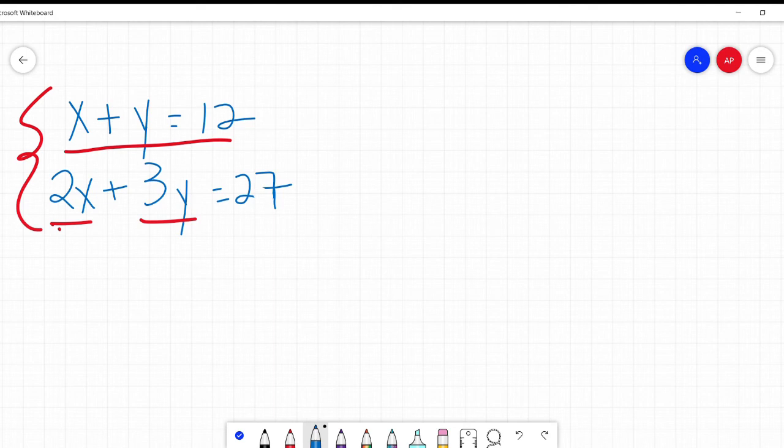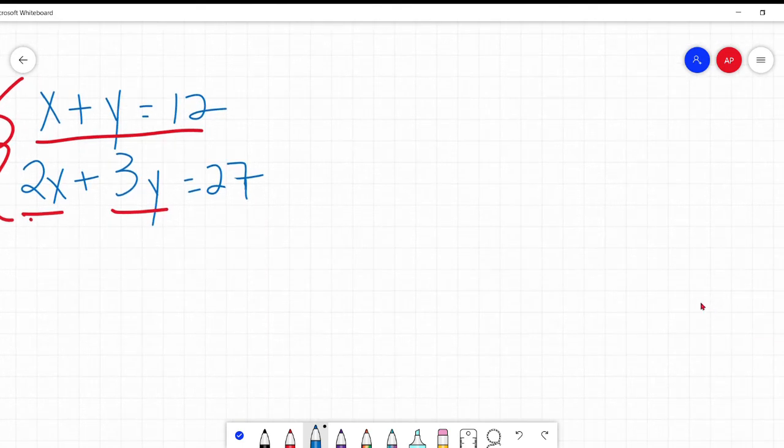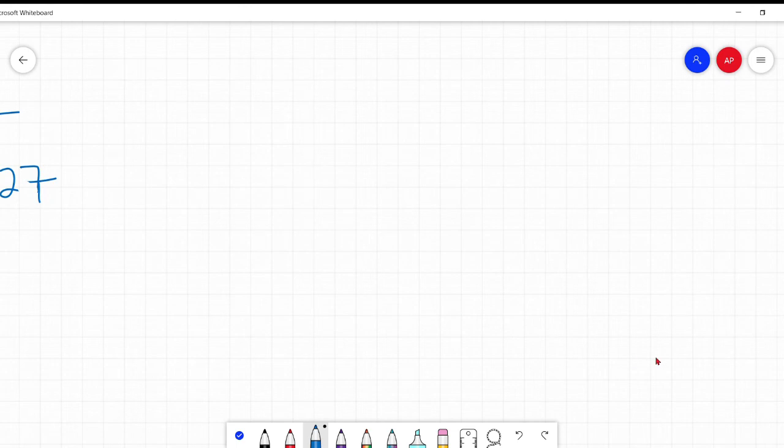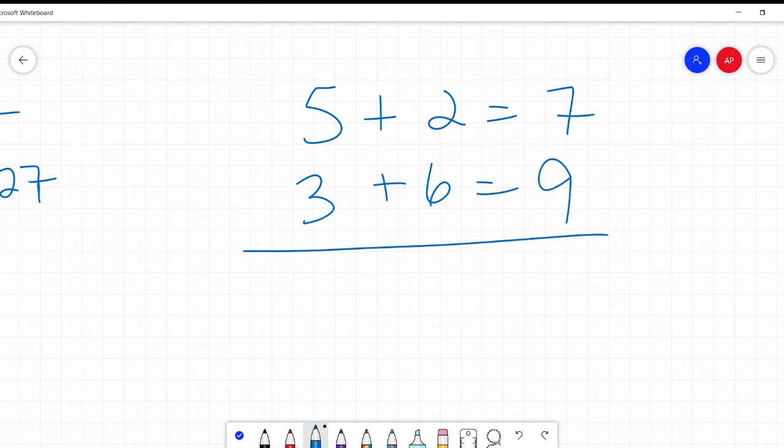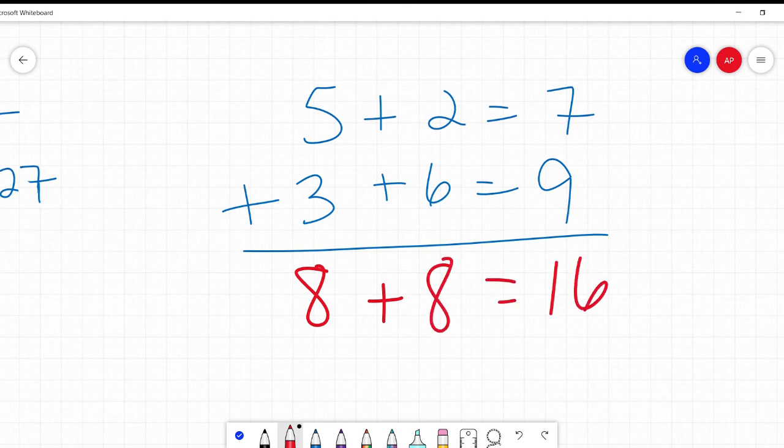To add the equations together. So let's take a step to the side. We talk about adding equations together. Why is that something we can do? You say like 5 plus 2 equals 7 and 3 plus 6 equals 9. I'm going to add these equations together. Let's see what happens. 5 plus 3 is 8. 2 plus 6 is 8. 7 plus 9 is 16. Is this still true? Yeah, it is. It absolutely is.